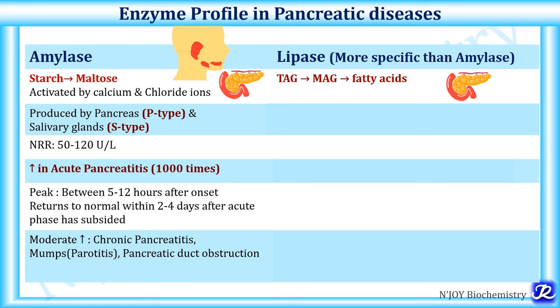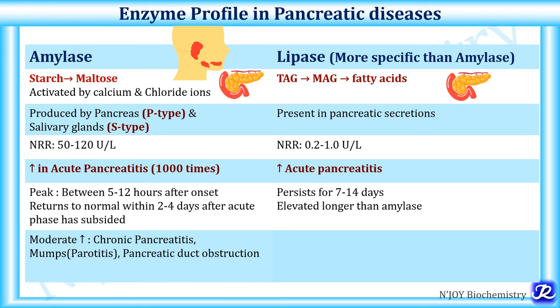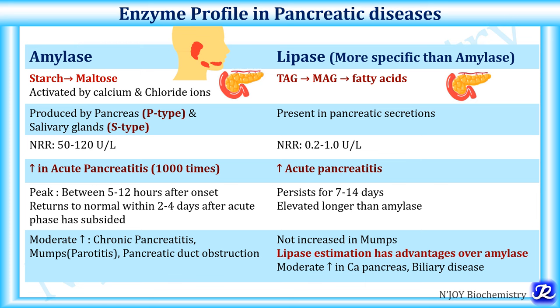Lipase is more specific than amylase. It breaks down triacylglycerol into monoacylglycerol and fatty acids, and is present in pancreatic secretion. The normal reference range of serum lipase is 0.2 to 1 unit per liter. It is increased in acute pancreatitis and persists for 7 to 14 days — elevated longer than amylase. It is not increased in mumps, and moderate increase is seen in carcinoma of the pancreas and biliary disease. Therefore, lipase estimation is more specific than amylase.